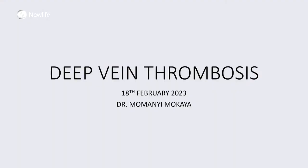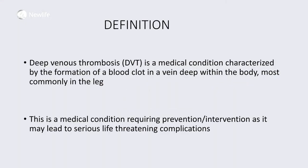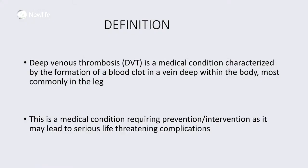Our topic today is deep vein thrombosis. Starting with the definition: this is a condition characterized by the formation of a blood clot found in the deep veins of the extremities of the body, mostly the legs and the hands, but it can be found in any other part of the body. This condition is serious, requiring prompt intervention, and of course we need to prevent it even before it presents itself.